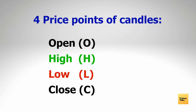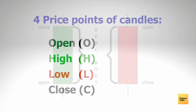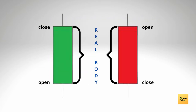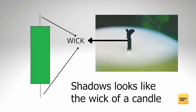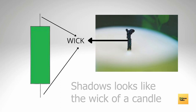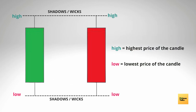These price points are the opening price, the high price, the low price, and the closing price for the same period — or simply we call them OHLC. The real body of the candlestick shows the open and close prices, while the shadows on the top and bottom of the body show the high and low prices for that particular period. The upper wick signifies the high of the period and the lower wick signifies the low of the period.